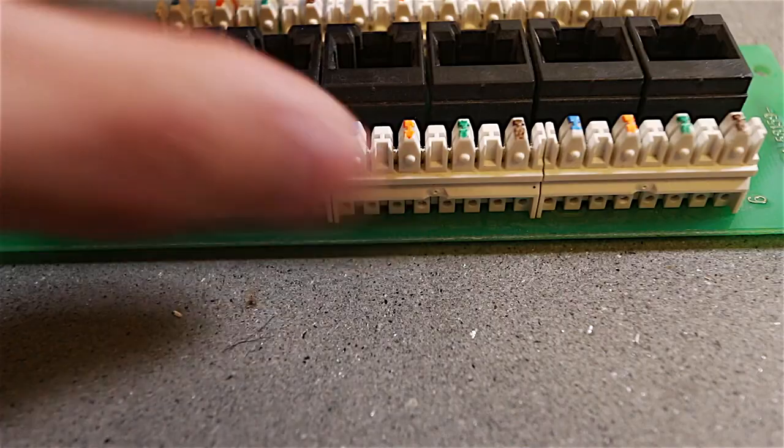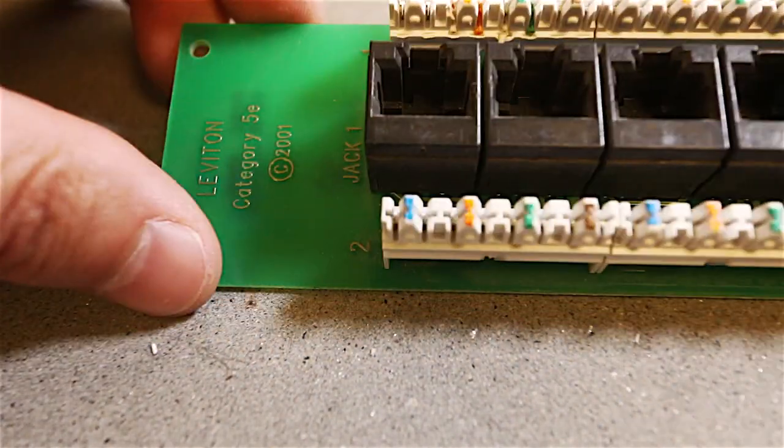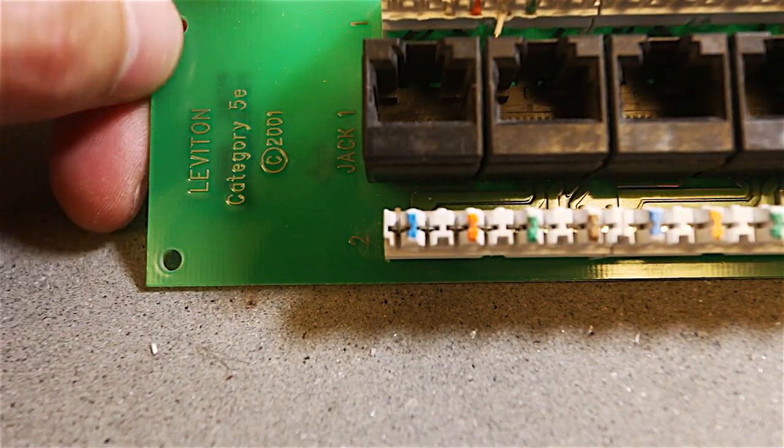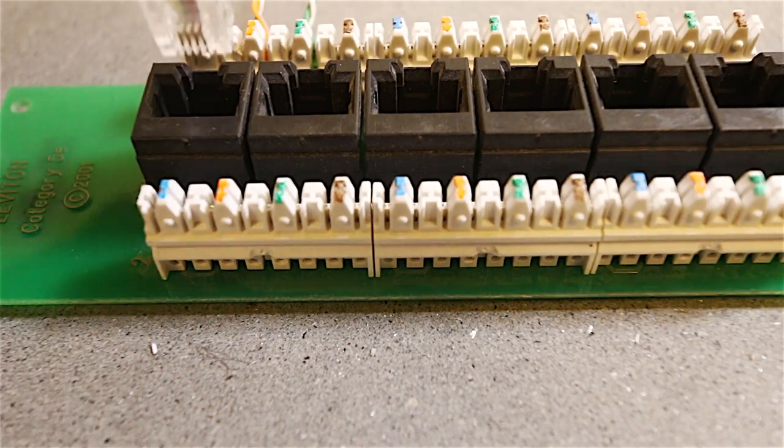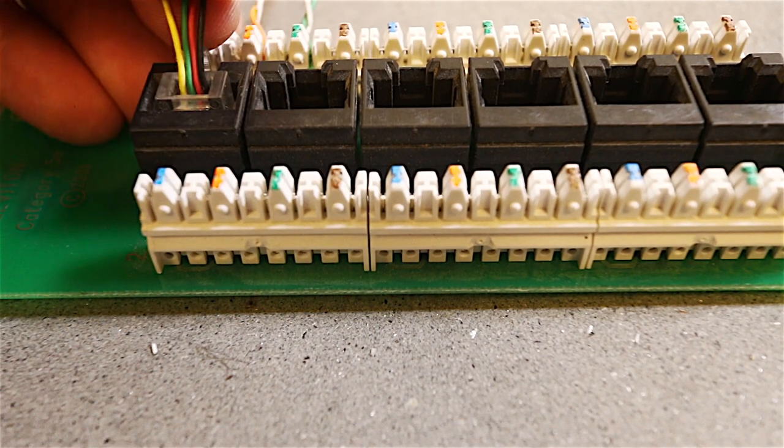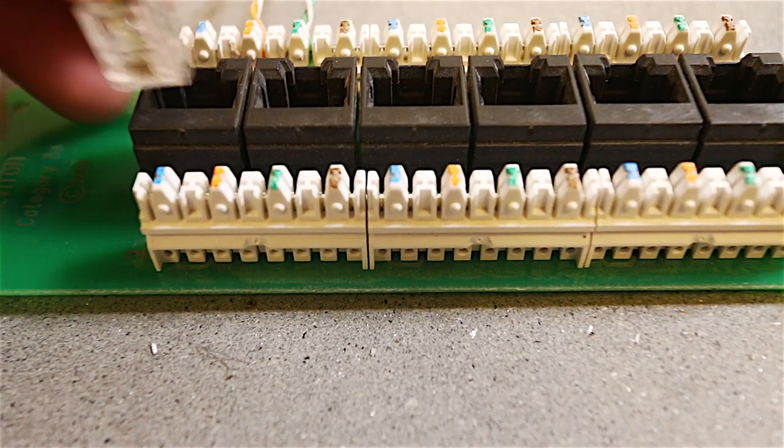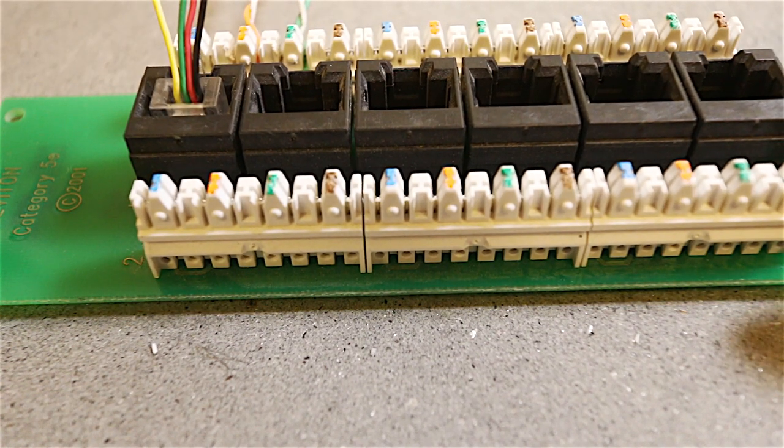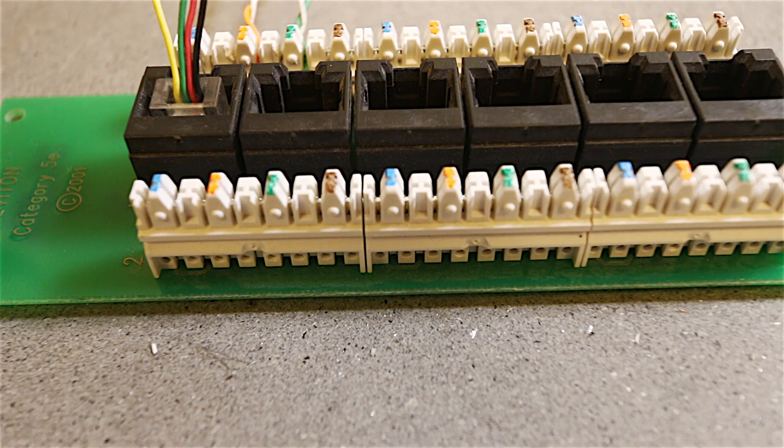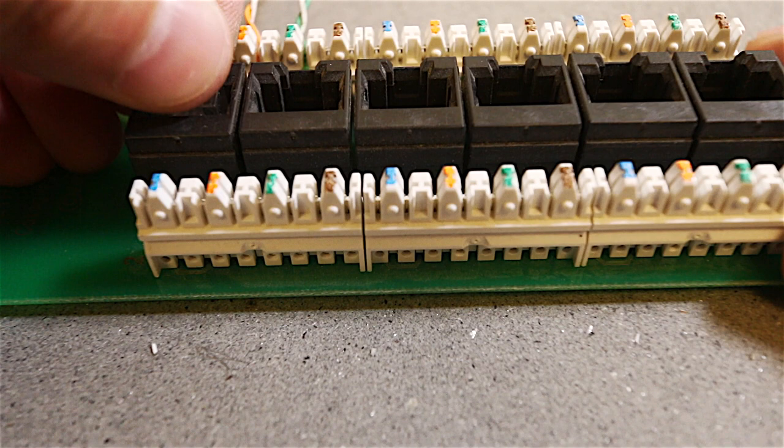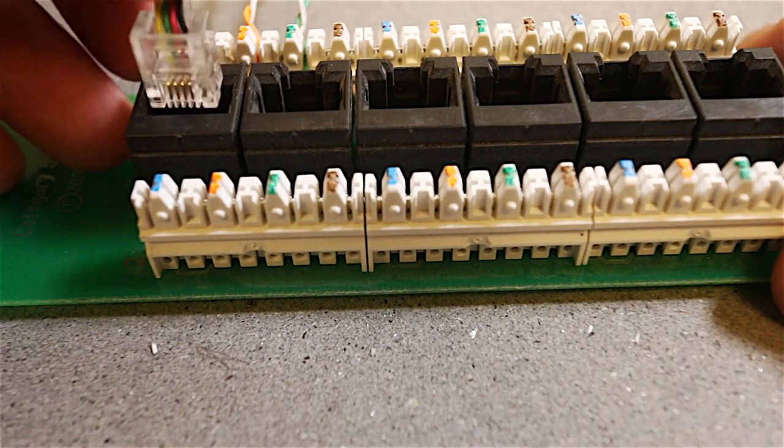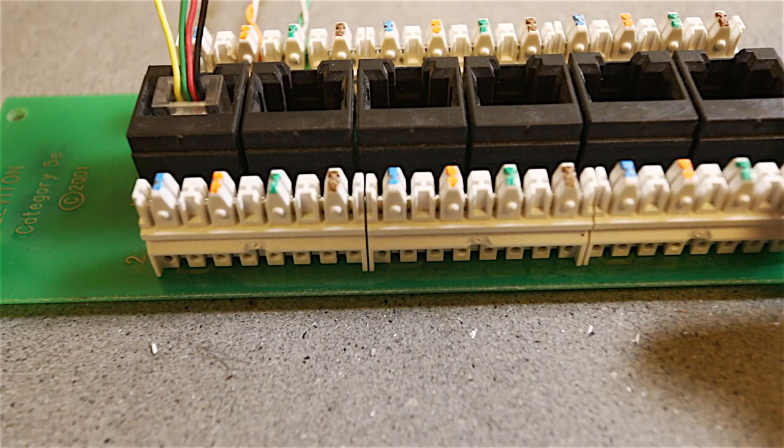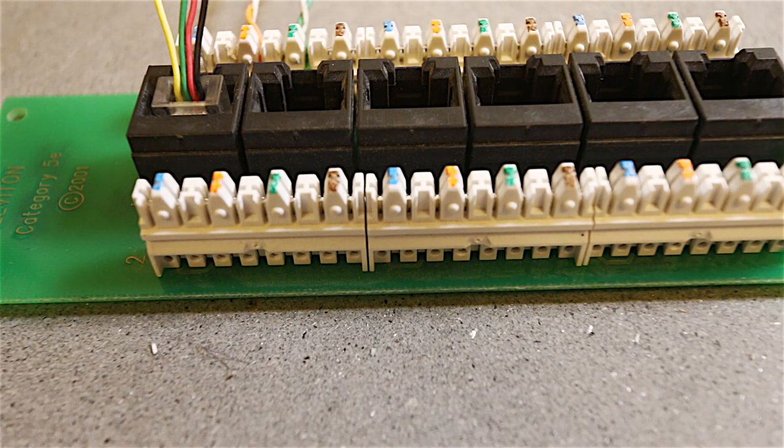So that brings in this kind of patch bay. This is a Leviton category five patch bay, but the nice thing is you can actually use these for telephones. It actually pops in and you can use this as a patch bay in your wiring closet. If you have one of these in your wiring closet, you can basically use a Cat 5 and convert it to an RJ-11, which is what is used for telephone.